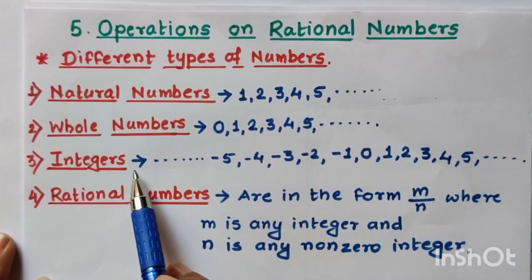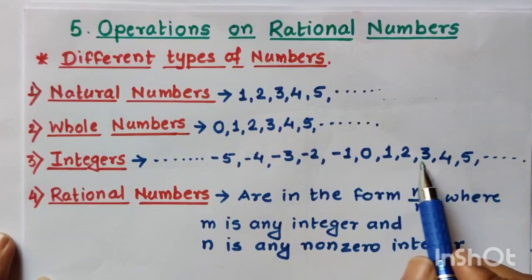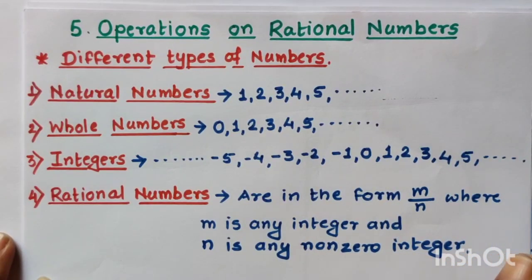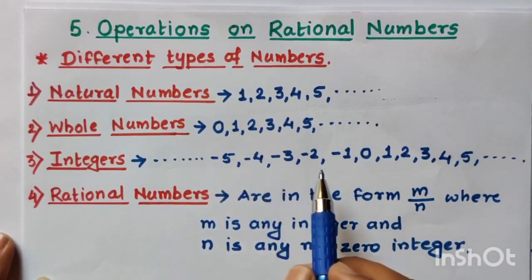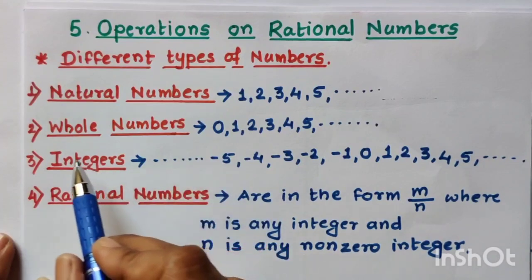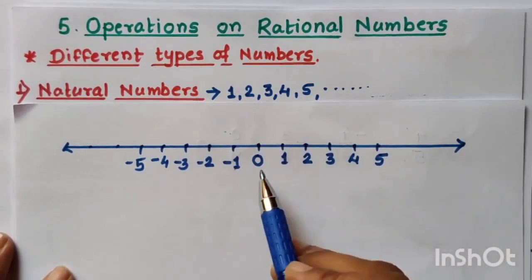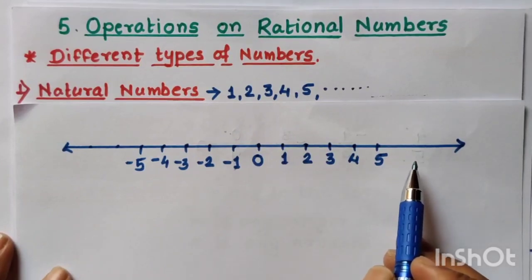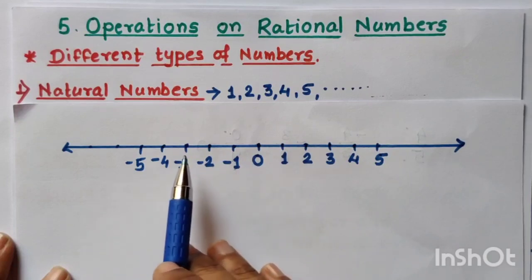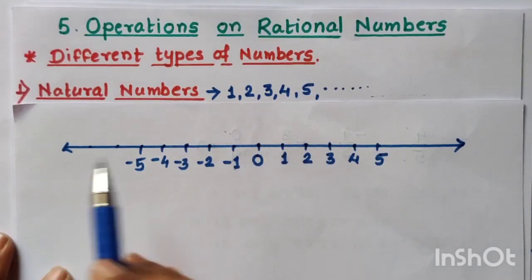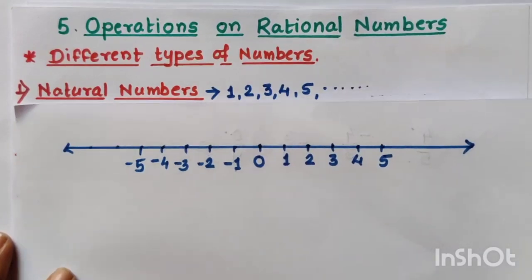The third type of numbers are integers. Integers include 0, 1, 2, 3, 4, 5 — all whole numbers — and they go on increasing to the right. On the left-hand side, we see all the negative numbers: minus 1, minus 2, minus 3, minus 4, minus 5, minus 6, minus 7, going on becoming smaller and smaller. On the number line, going right means bigger numbers, going left means smaller numbers. So 0, all positive numbers, and all negative numbers are included in integers.